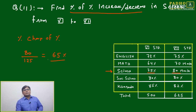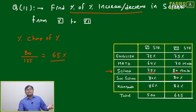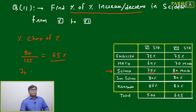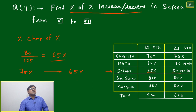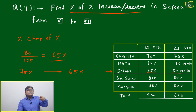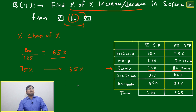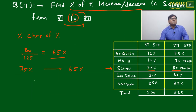So 80 out of 125 equals 65 percent. In science, sixth standard she got 75 percent and in seventh standard she got 65 percent. The question asks for the percentage change — increase or decrease — in science from sixth to seventh standard.